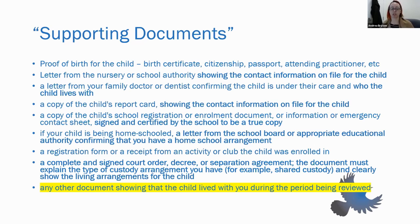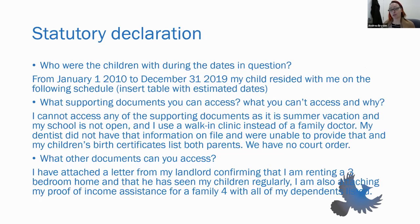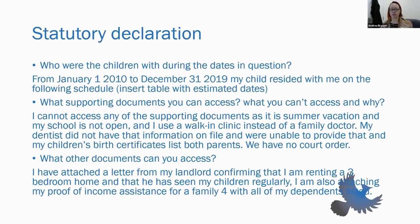The category 'any other document showing the child lived with you during the period being reviewed' is where I came at it as an advocate. I started creating statutory declarations. Inspired by prior income assistance advocacy work, I thought: can't we do an affidavit-type document? So I began writing statutory declarations: 'I, Jane Doe, mother of [address], affirm I'm writing this in support of my proof of eligibility for Canada Child Benefit for the period in question. I am the primary caregiver of [child], born on [date], having been the caregiver for the period in question except for [dates when the other parent provided care].'